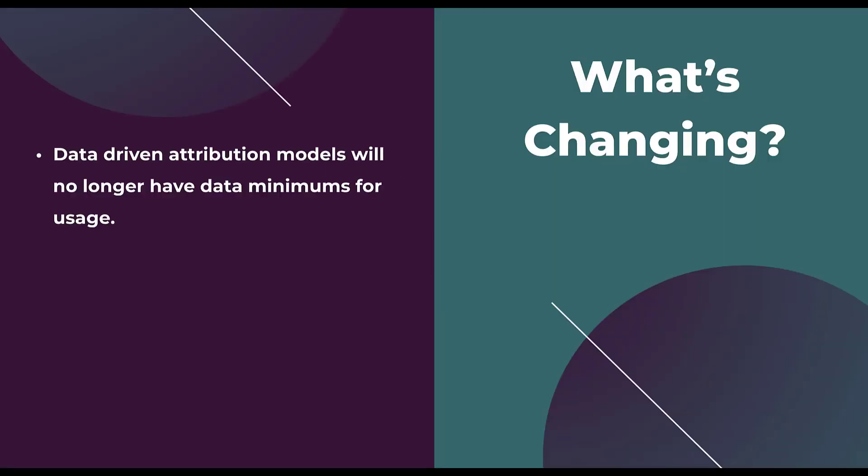So now let's get into what's changing. First, the data driven attribution model will no longer have data minimums for usage. All of that stuff about 3,000 ad interactions and 300 conversions for each conversion action is going to go away. Google claims that their conversion modeling practices are getting so much better that they no longer need the data minimums to make data driven attribution work for every conversion action in every account, no matter what the volume is.